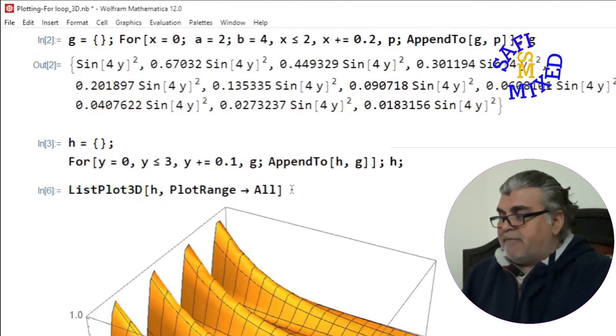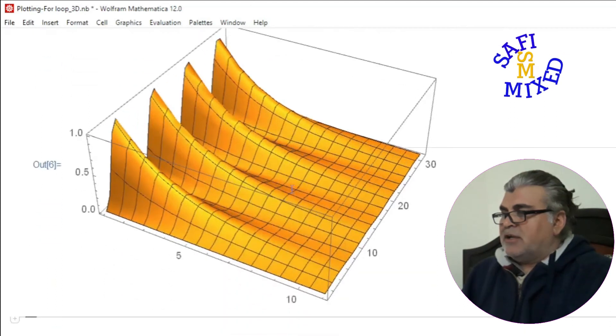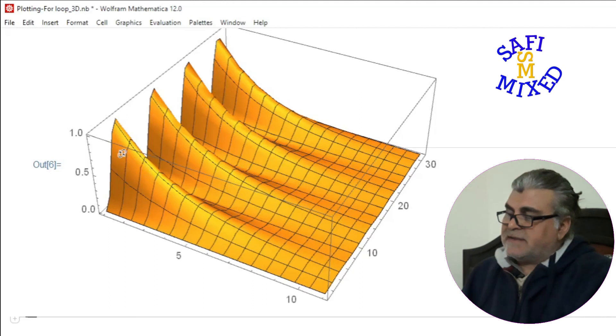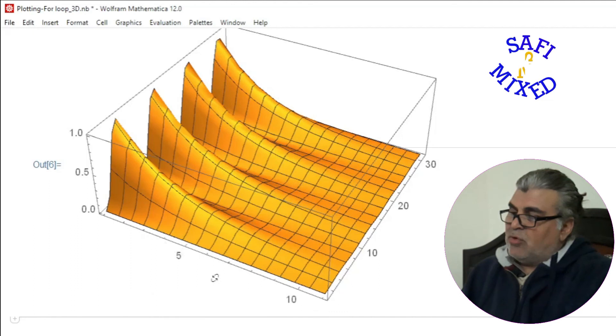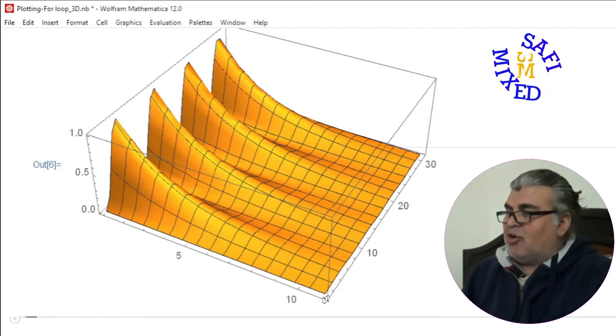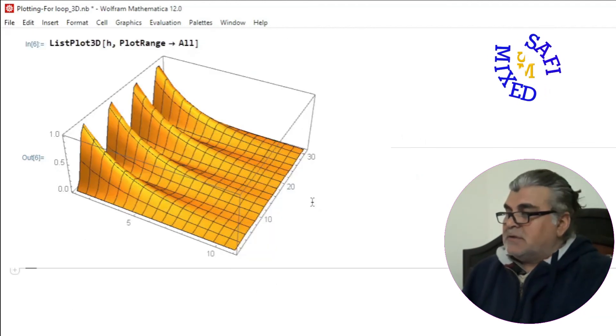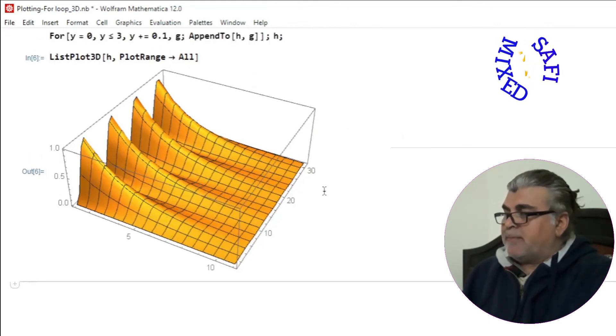So this is in fact sinusoidal along this axis and decaying along this axis. So this axis represents the value of x and this axis represents the values of y. It is sinusoidal along the y axis and decaying along the x axis. So this way you can generate data through for loop for plotting 3D figures.